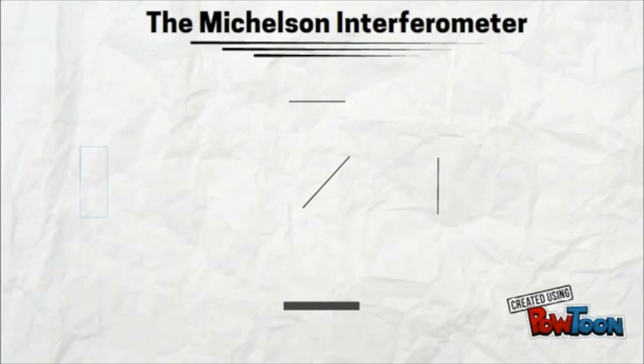The interferometer consists of five parts. One light source, two mirrors, one beam splitter, that's pretty much just a fancy term for a prism or mirror that splits the beam in two, and a detector.